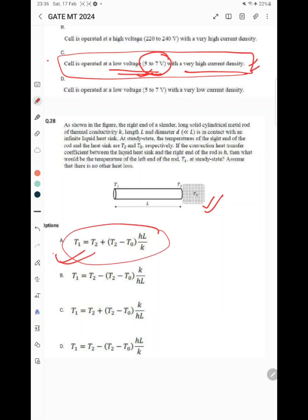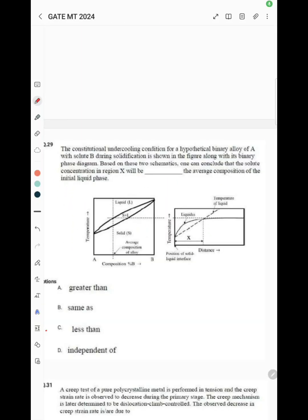The next question is about phase diagram. It's saying the constitutional undercooling condition for a hypothetical binary alloy of A with solute B during solidification is shown in figure along with the binary phase diagram. We have to identify, based on these two schematics, the solute concentration in region X.